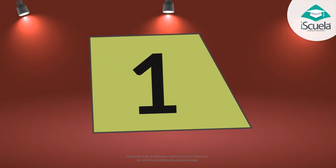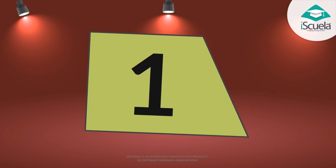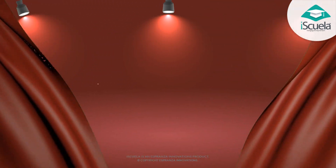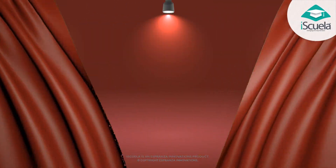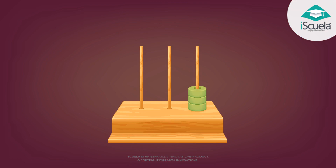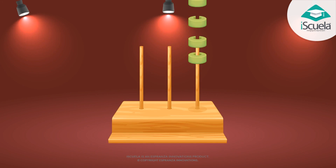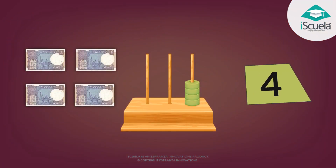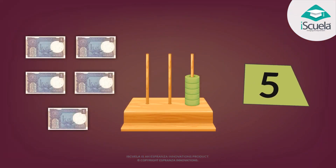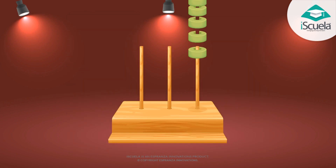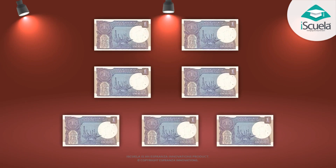Now tell me what is written on this card — one. One rupee, one bead: one. Two rupees, two beads: two. Three rupees, three beads: three. Four rupees, four beads: four. Five rupees, five beads: five. Six rupees, six beads: six. Seven rupees, seven beads: seven.